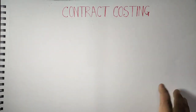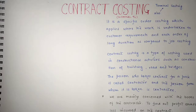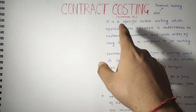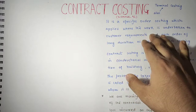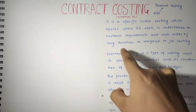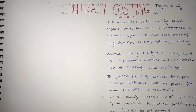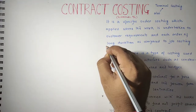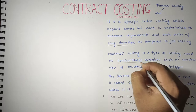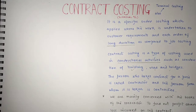In that regard we have to prepare contract costing. Let us discuss the theory part in easy, layman language. It is a special work order costing which applies when work is undertaken according to customer requirements, and most importantly, each order is of long duration as compared to job costing. Contract costing is mainly used in constructional activities such as construction of buildings, roads, bridges, houses, etc.